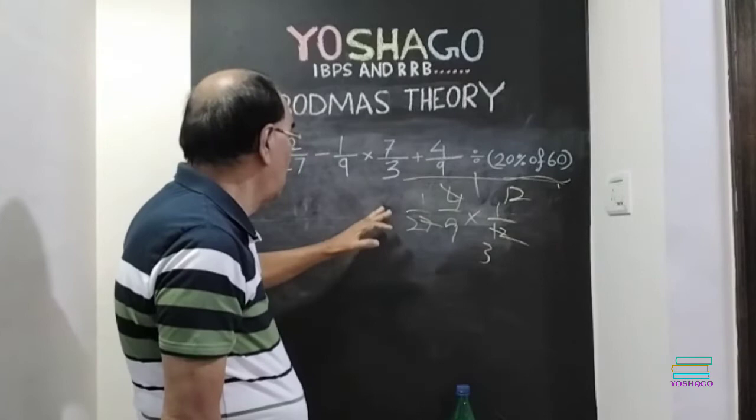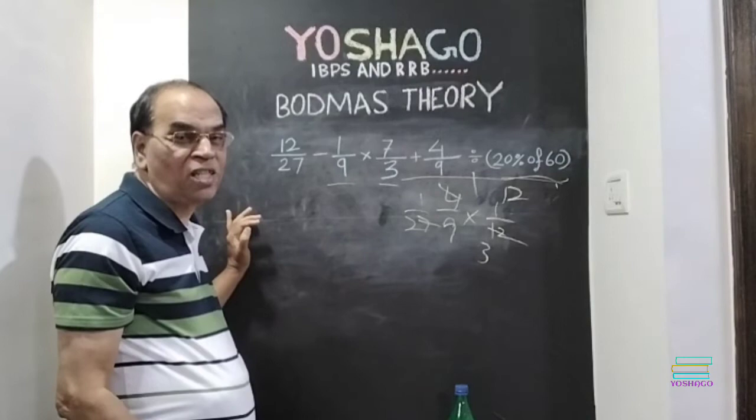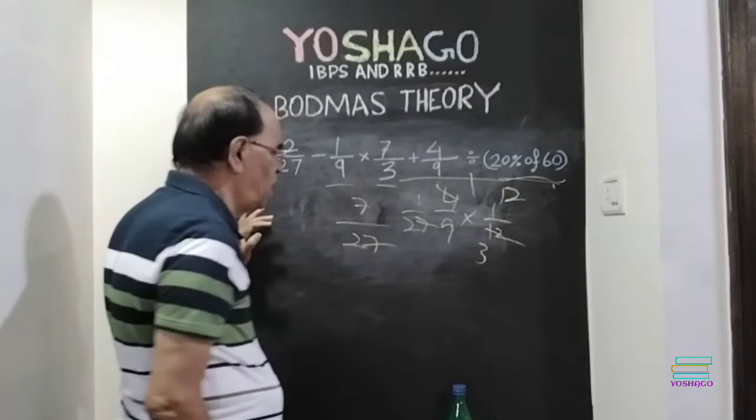Now, multiplication. 1 by 9 into 7 by 3. How much is? 7 by 27. Here, we have got 1 by 27 after multiplication.